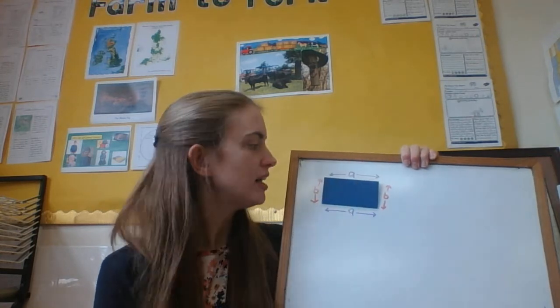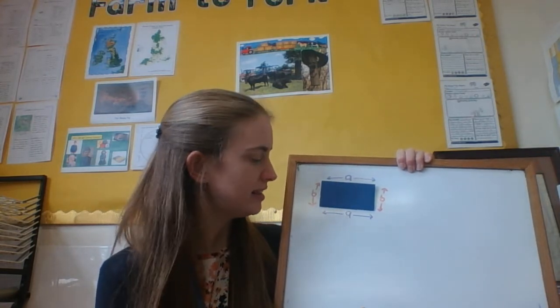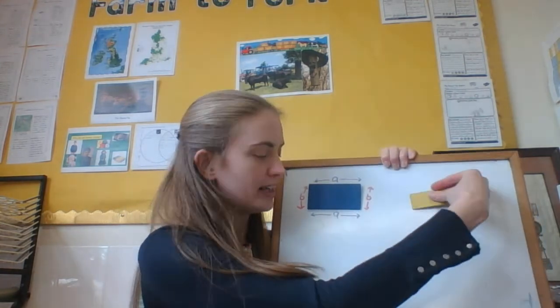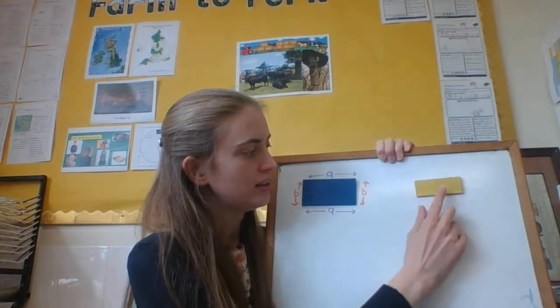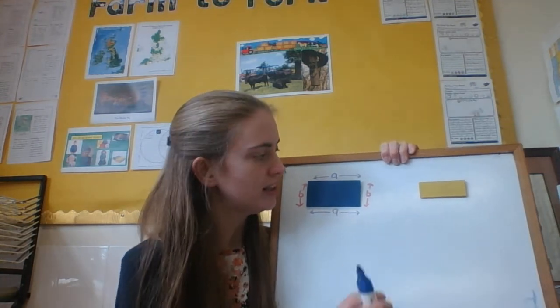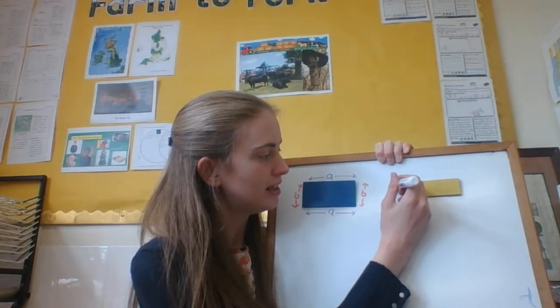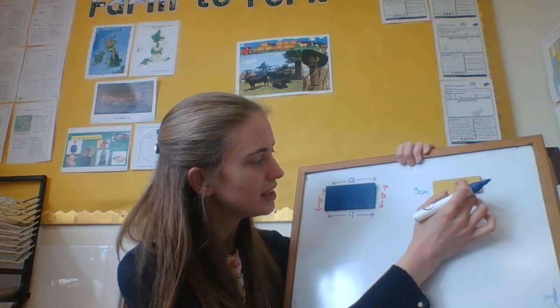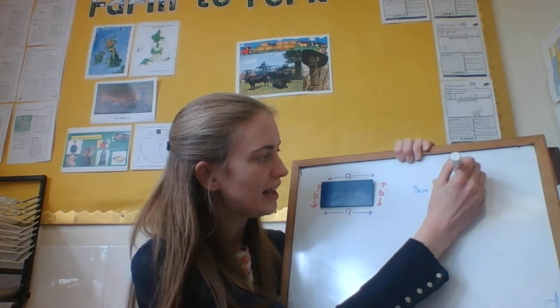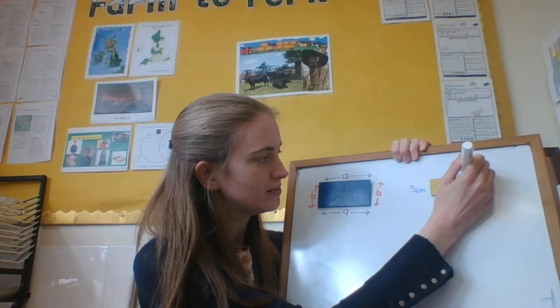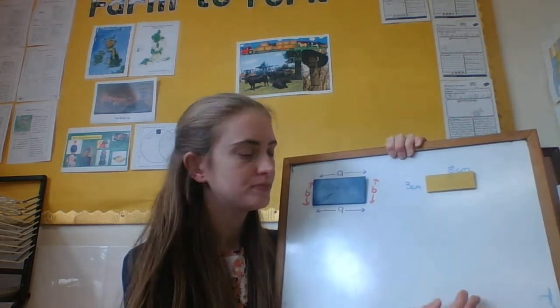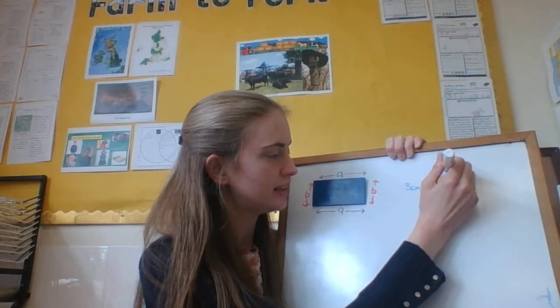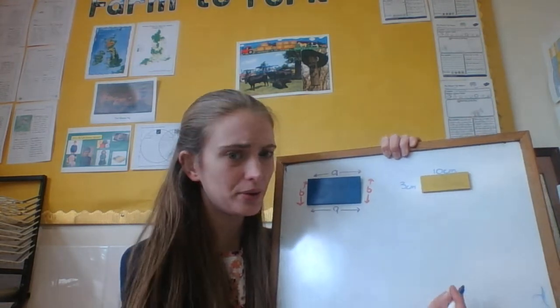So let's say that, let's have a look at this yellow rectangle here. So I've measured this and I know that this one here is 3 centimetres. And this one here is 8 centimetres. Now, what that, actually that's not true, that's 10 centimetres. That's 10 centimetres. There we go.